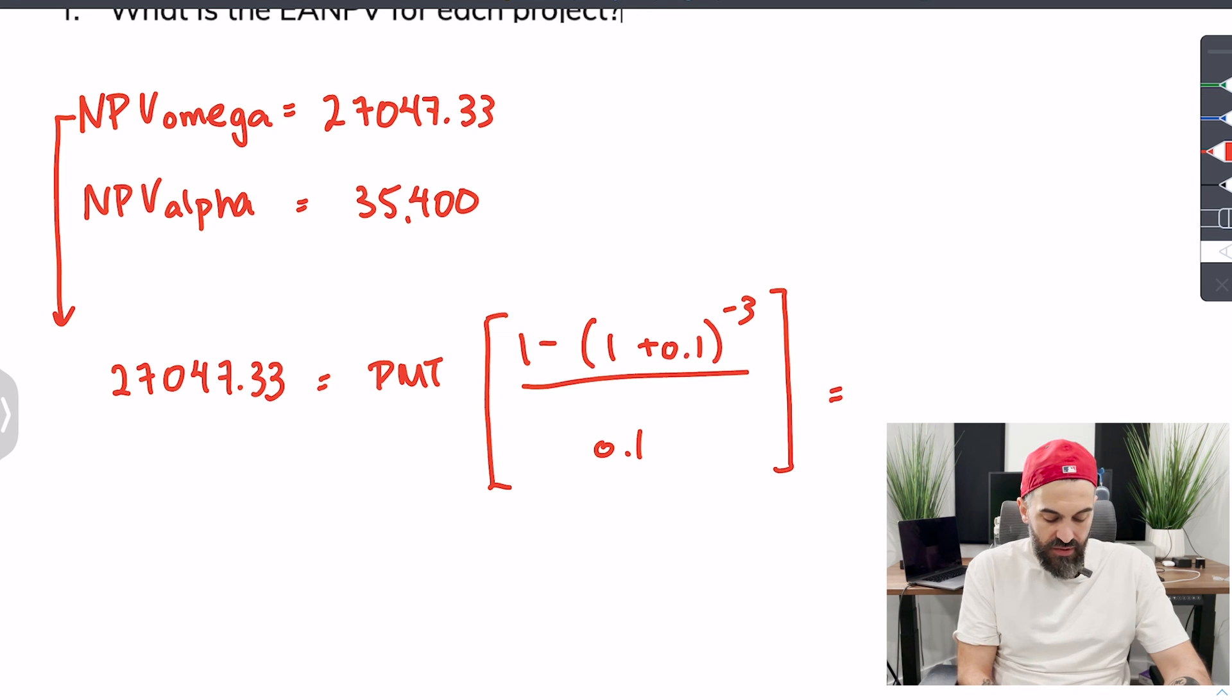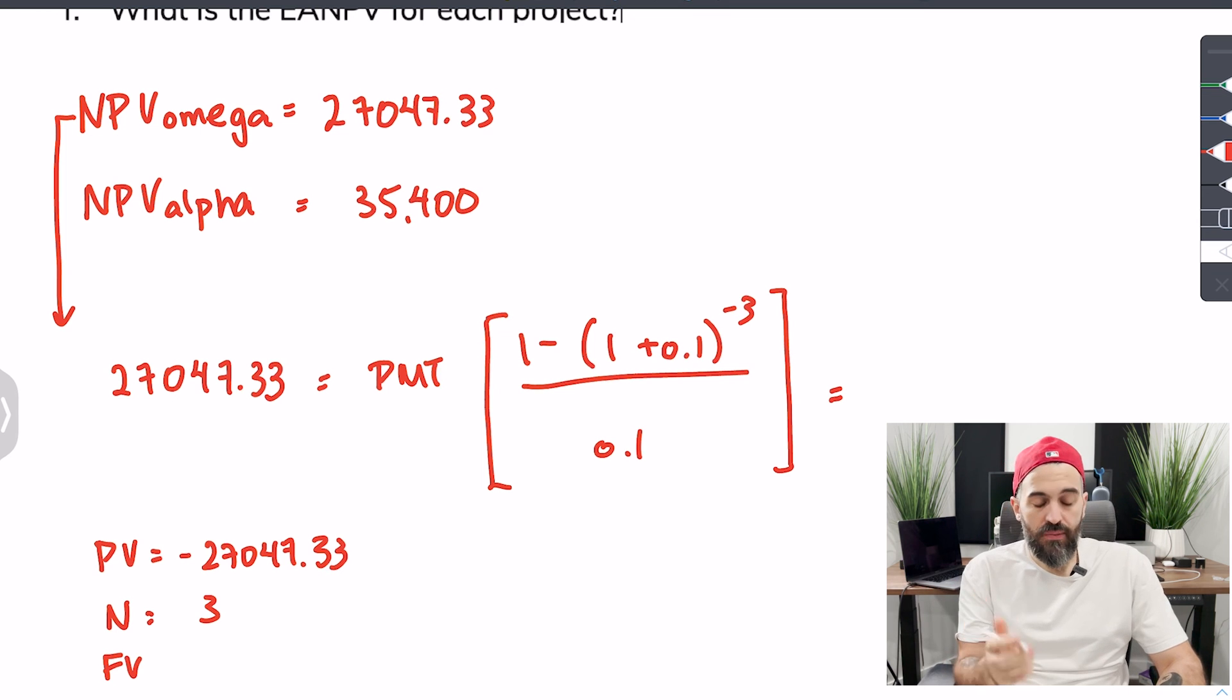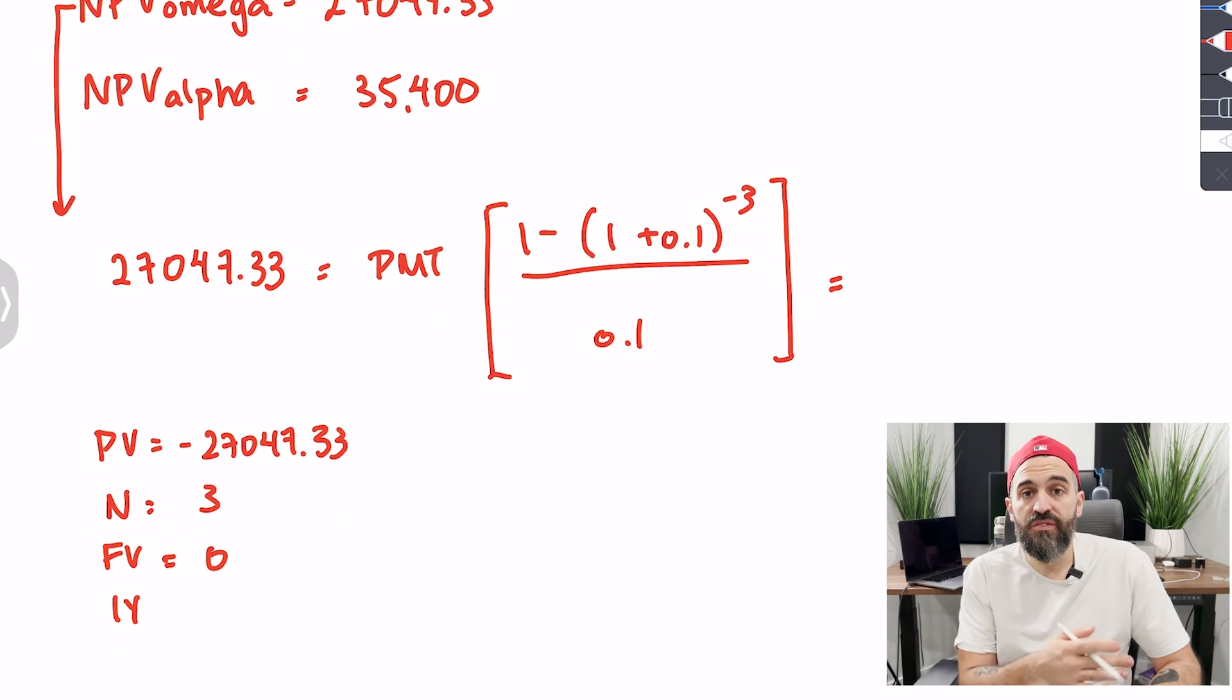My rate is 10%, it's a three-year investment divided by my rate. On the financial calculator you would set your present value to negative $27,047.33, everything else would be the same, the n would be 3, the rate would be 10, you have no future value and you'd be computing once again for the PMT. Regardless of which route you took you should have ended up at the same place, $10,876.13 is your annual net present value.